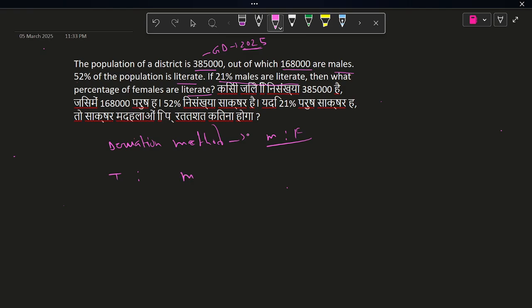385,000 where the males is 168,000. Cancel out the thousands, it can be 77 and 24. So this is the ratio of total is to male.